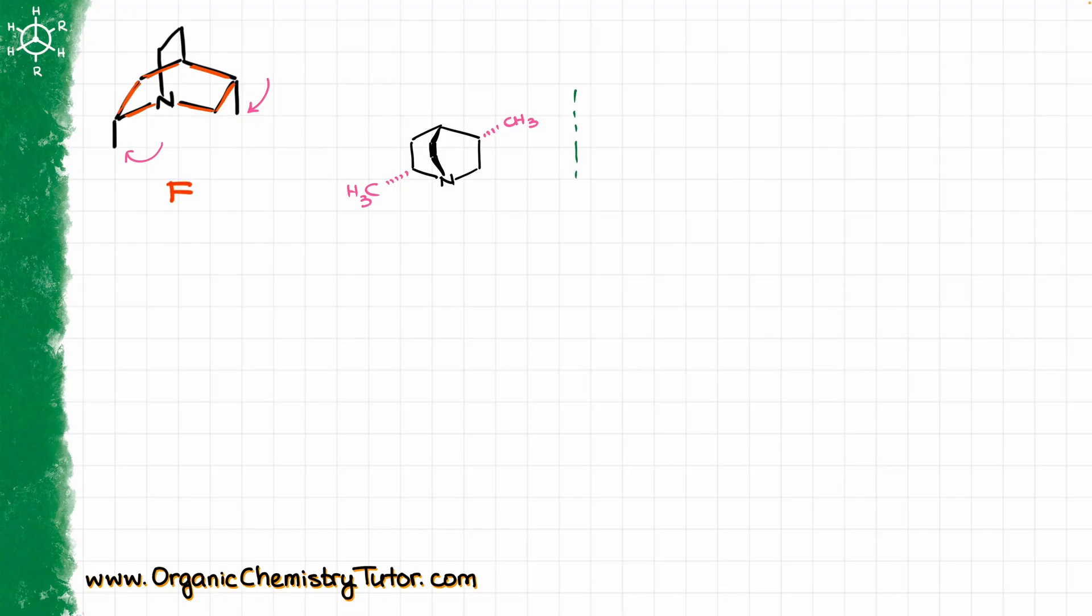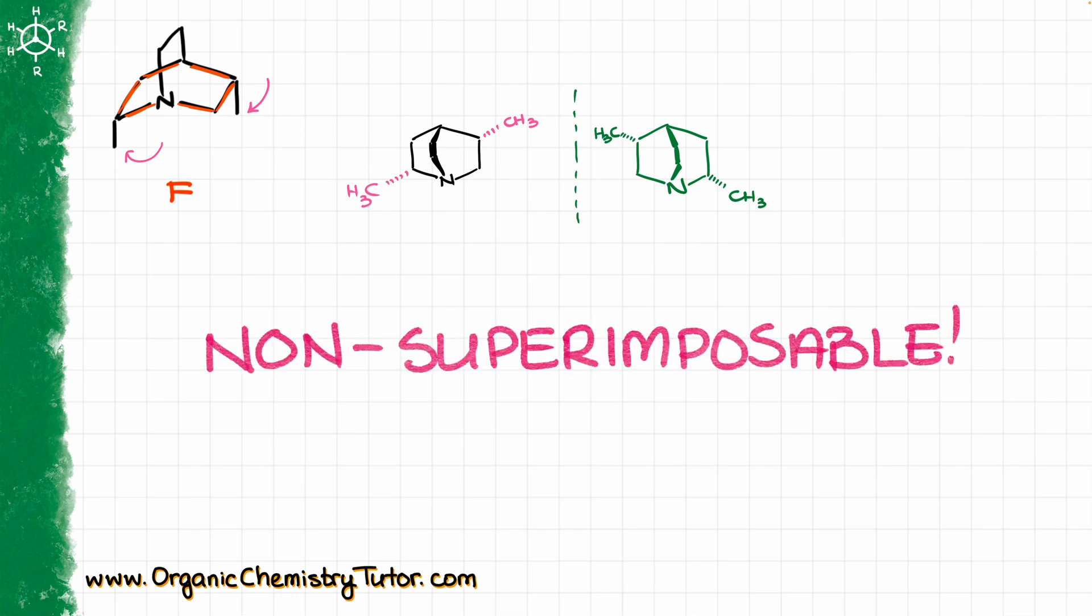Now, looking at this molecule, it becomes significantly more manageable to figure out whether that thing is going to be superimposable with its mirror image or not. Because now, if I draw my mirror image, I can just do a vertical line like before. I will draw my six-membered ring over here with my nitrogen. Then I still have my bridge. Then I have the CH3 on the left side and another CH3 on the right side. So these two guys, no matter how much I rotate them in space, no matter how much I flip them, they will never be able to superimpose in space. They're always going to be different. Which means that we have found our non-superimposable mirror image.